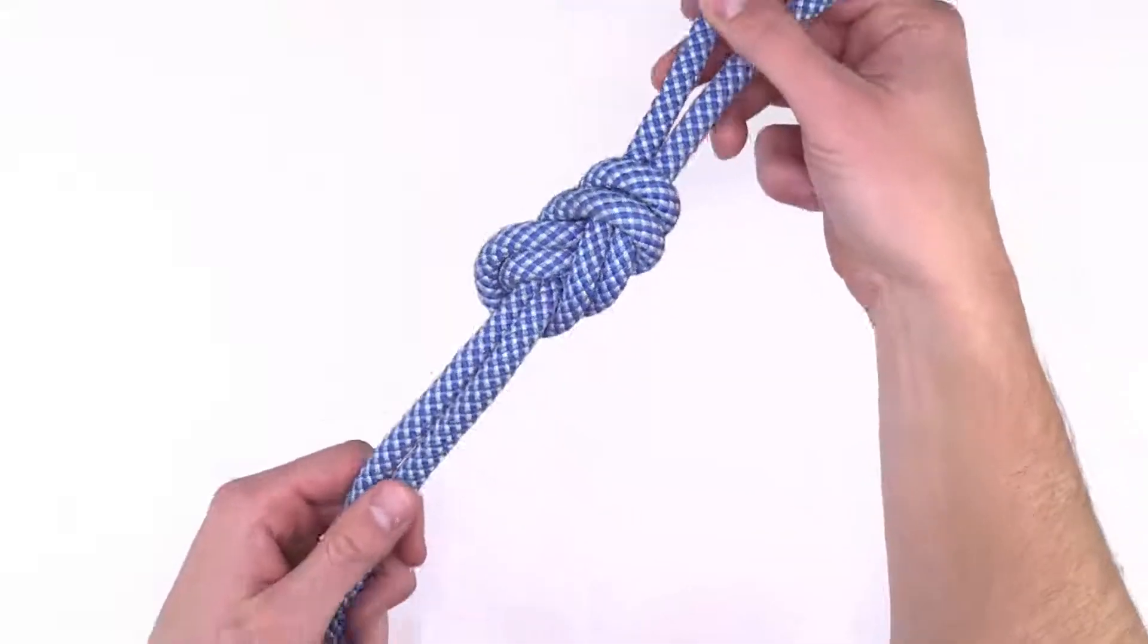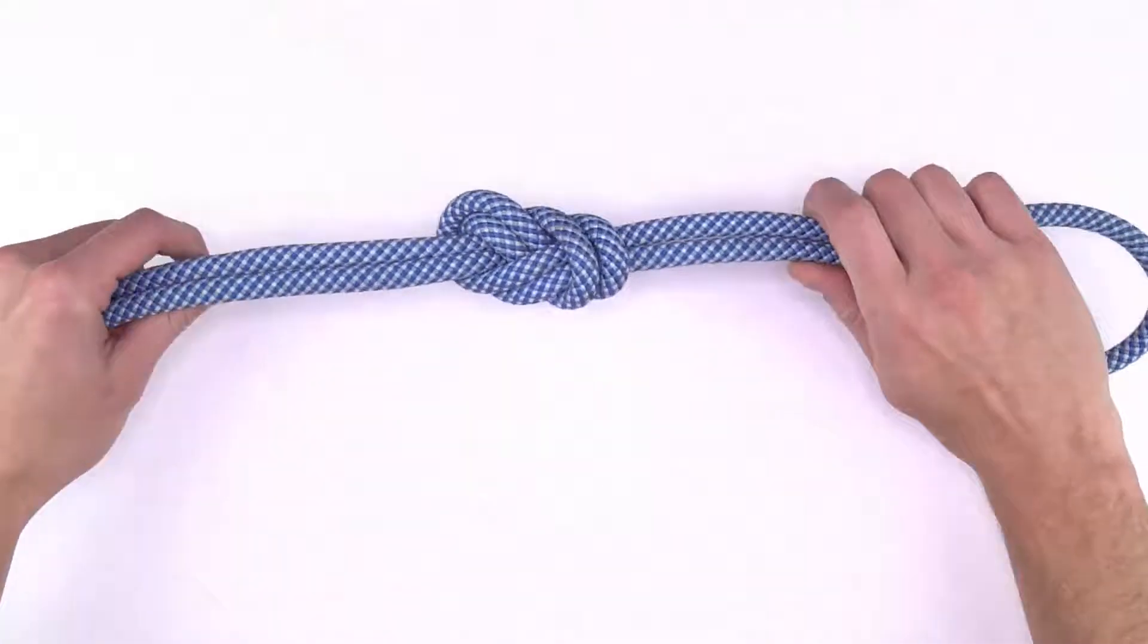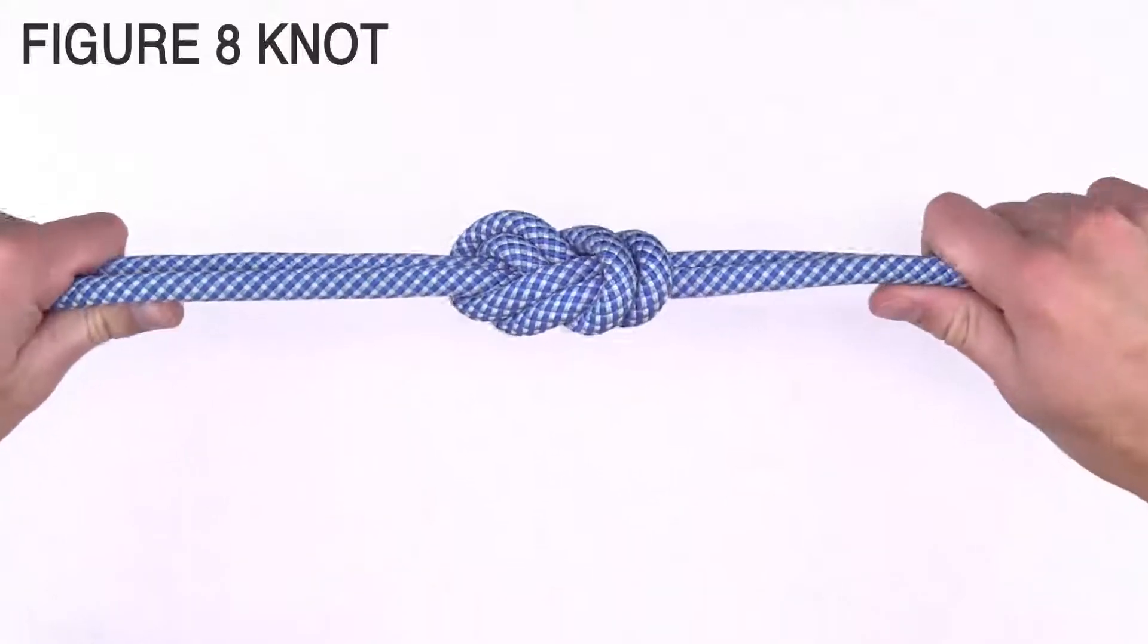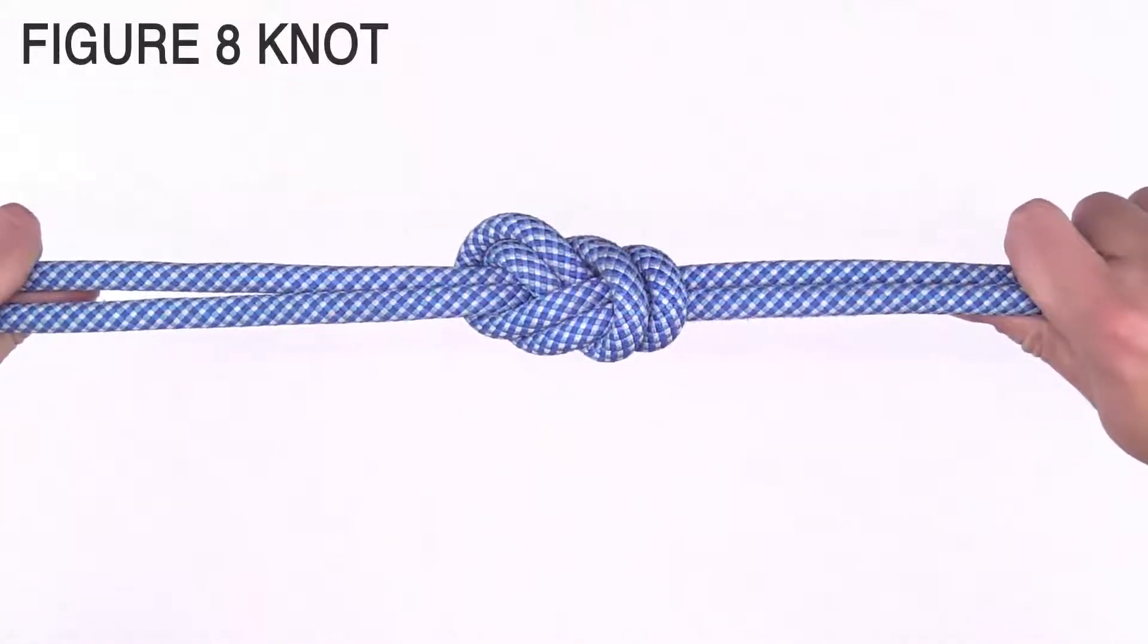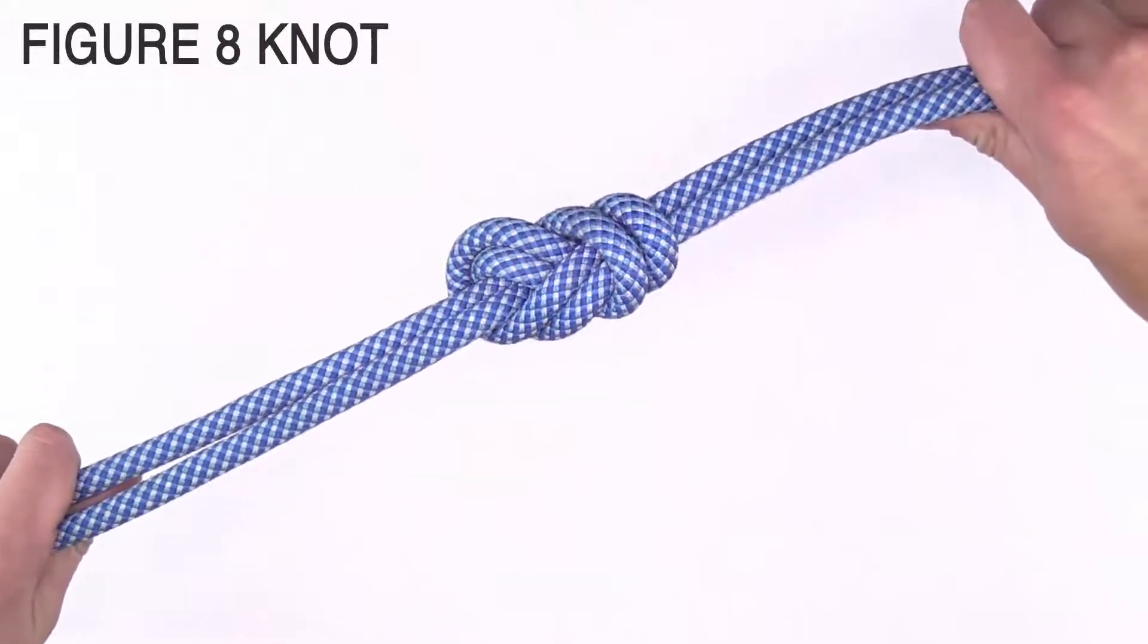Today we will be going over how to tie one of the most fundamental knots in rock climbing. The figure eight knot is most commonly used to tie in to a climber's harness.